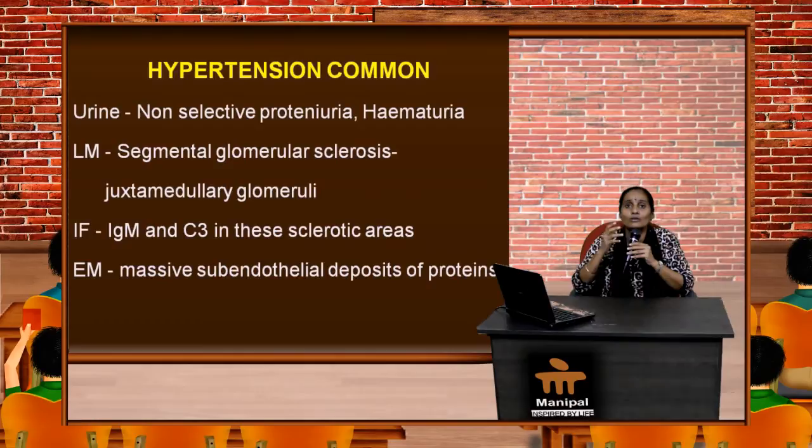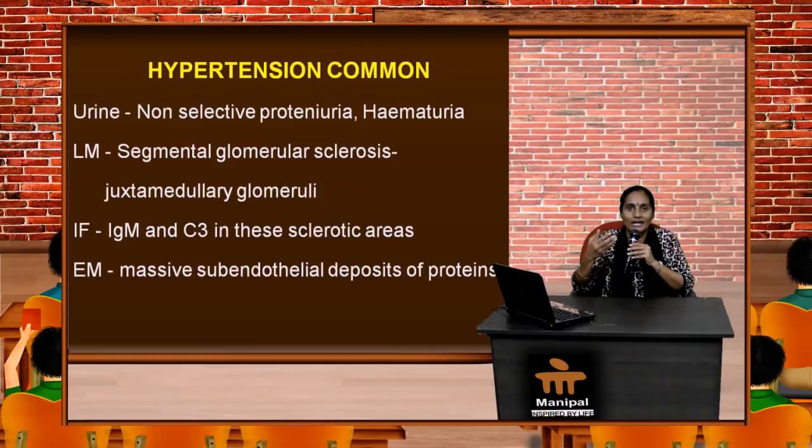The sclerosis in FSGS especially affects the juxtaglomerular glomeruli — the glomeruli opposite the medulla. Immunofluorescence shows IgM and complement 3, specifically present wherever glomerulosclerosis is seen, which can be patchy. Electron microscopy shows massive sub-endothelial deposits of proteins.